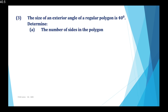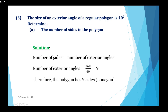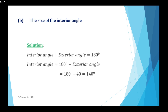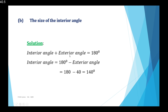Example 3: The size of an exterior angle of a regular polygon is 40 degrees. Part A: determine the number of sides. The number of sides equals the number of exterior angles, which is 360 divided by 40, giving nine. Therefore the polygon has nine sides — that is a nonagon. Part B: determine the size of the interior angle. Using the property that interior angle plus exterior angle equals 180 degrees, the interior angle is 180 minus 40, which equals 140 degrees.